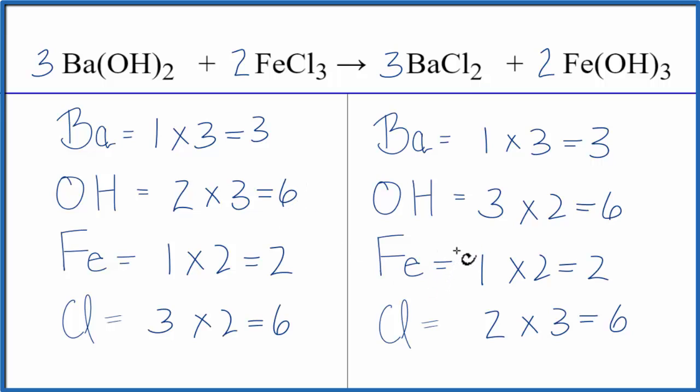So there's two keys to balancing this. One, if you count the hydroxide as just one item, it makes it much easier, you're not counting all these different oxygens and hydrogens. And then if you have an odd number, like we did with the chlorine at first, if you can get that to an even number, that'll often make the balancing go a lot better.